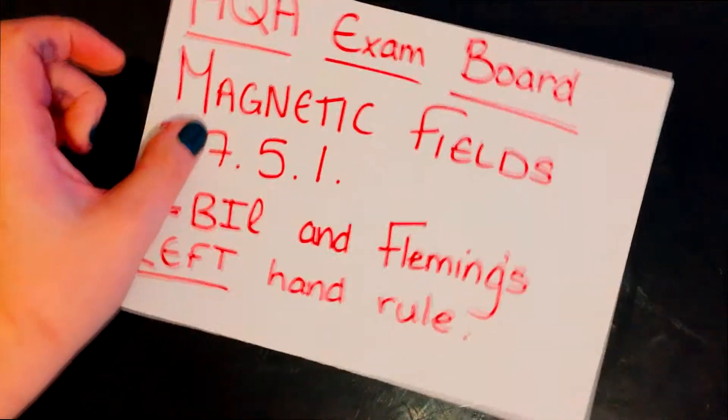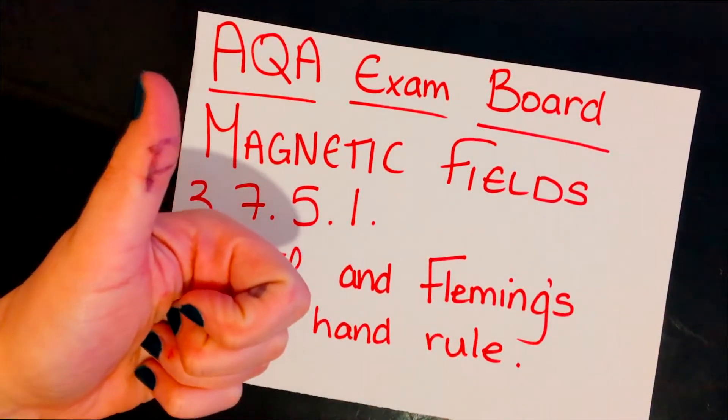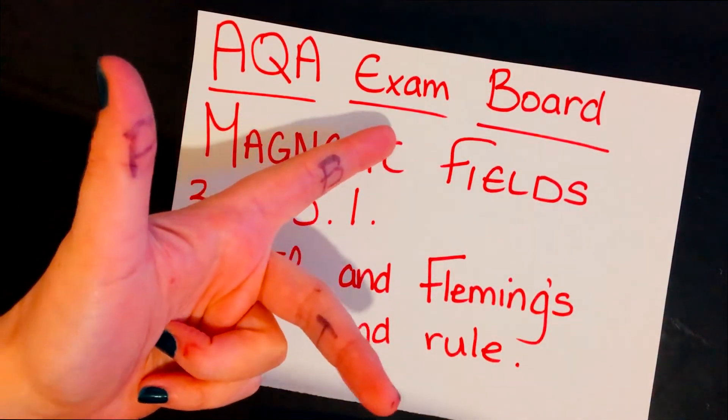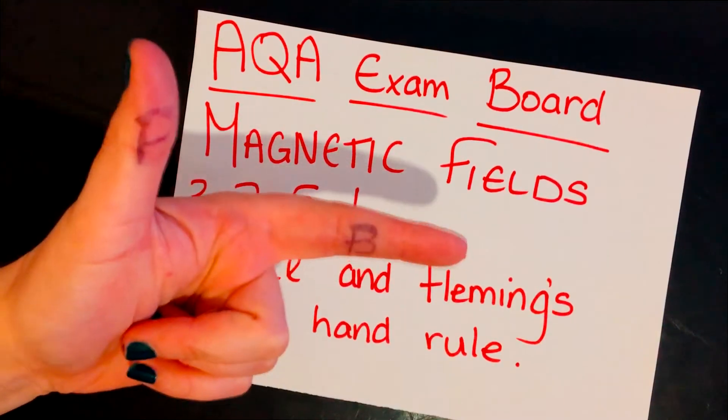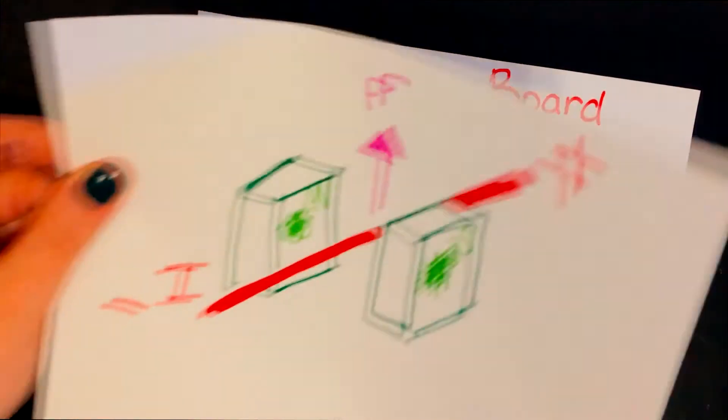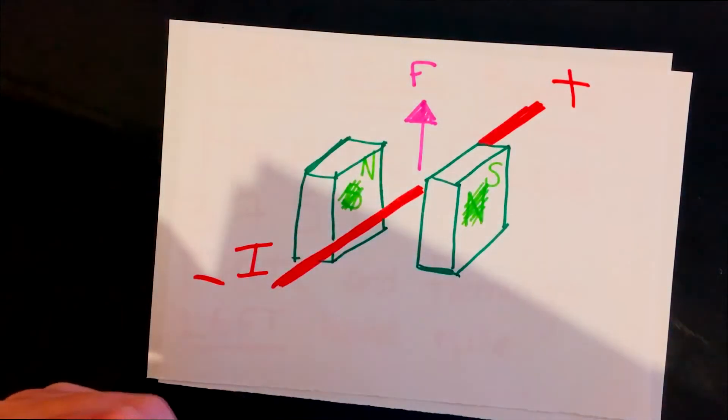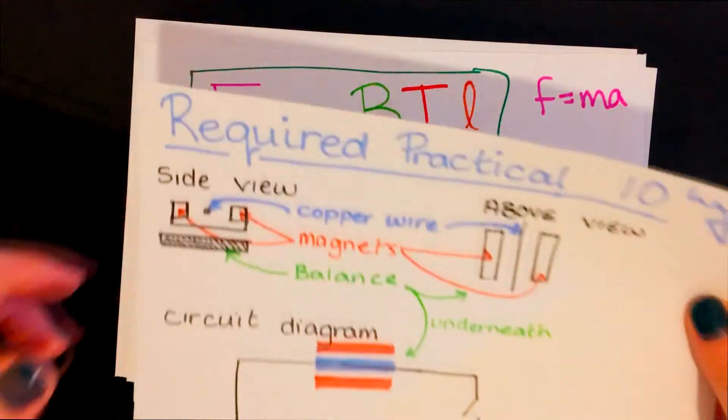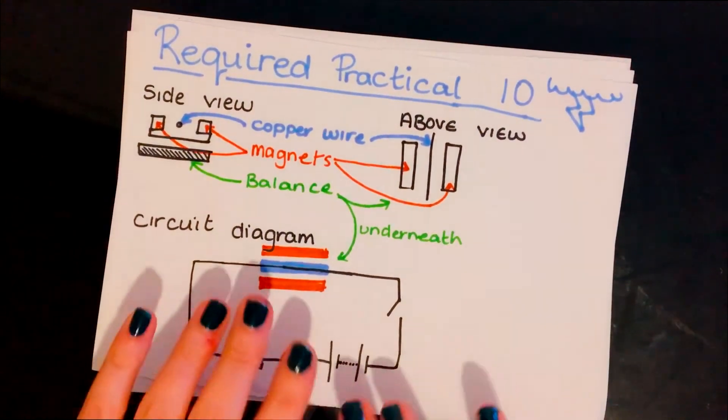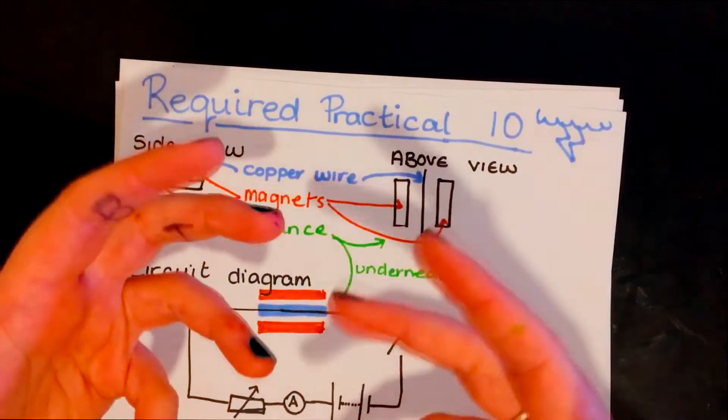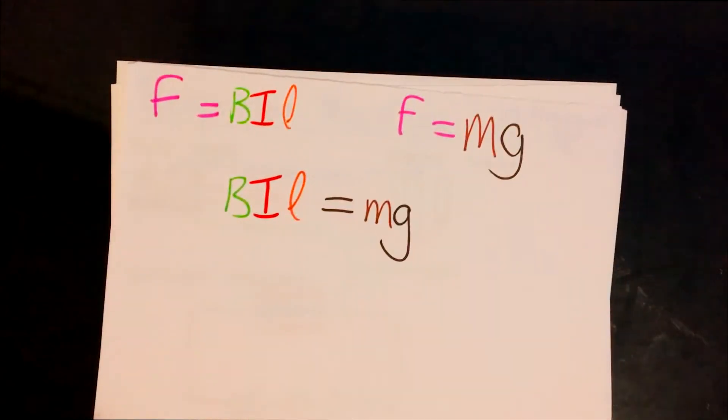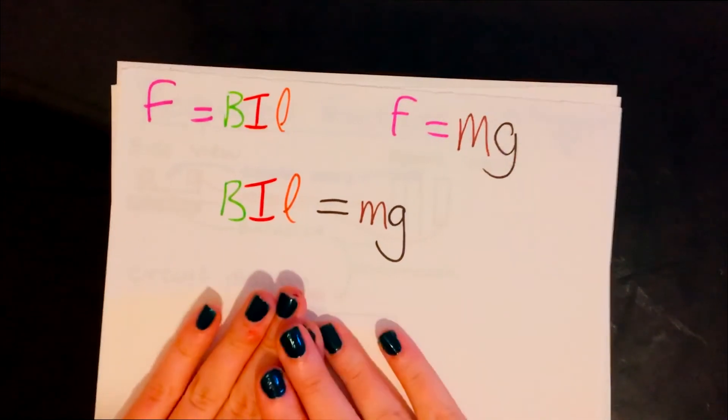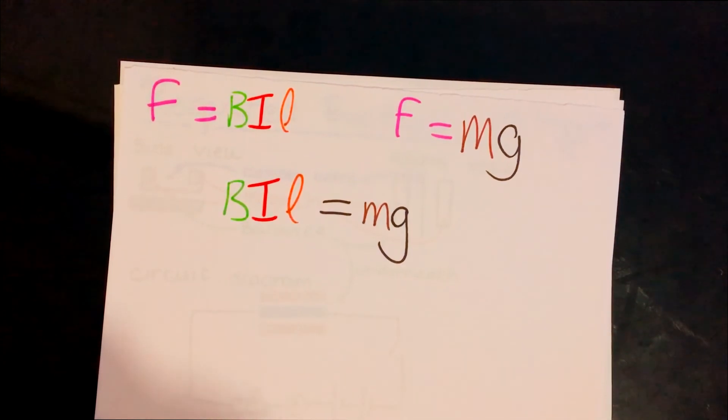Essentially what we've done is we've ticked off all of this, fine and dandy. You know how to use the left-hand rule, you know that thumb is movement caused by force, first finger is field, second finger is current. You can use them in a scenario like this, you know what each of them stand for and what units you can measure it in, and you've also had a quick rundown over what the required practical is and how to use that equation in a sense where you equate weight to the force due to the field on a wire. So I'm going to go and have a cup of tea, have a good evening, goodbye.